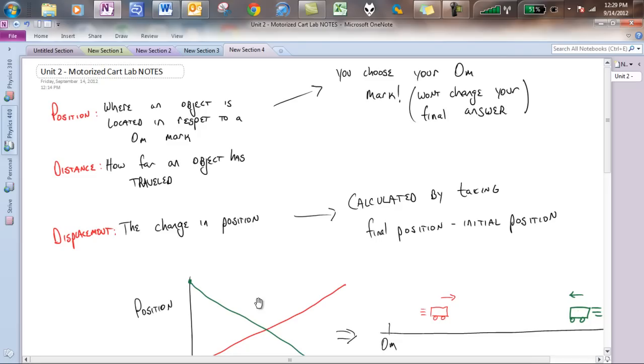Distance is how far an object has traveled. This is the total amount of distance. It doesn't matter if you're going left or right. It's just a straight out number that we are going to add everything up from. And then displacement is the change in position. There will be a calculation for this where you will take the final position and minus the initial position.